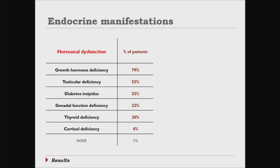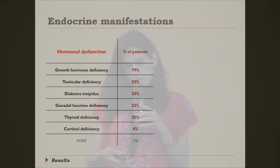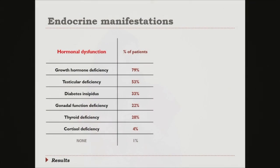Gonadal function deficiency — the difference between testicular deficiency and gonadal function deficiency is that in the latter it comes from the pituitary. Here the testicle is infiltrated; here it is the pituitary which is infiltrated, and then the gonads — ovaries in women and testicles in men — do not function. Thyroid deficiency is seen in about 20% of patients. Cortisol deficiency is pretty rare. And an important thing is that almost nobody has no hormonal deficiency — you don't always have symptoms, but if you look for a hormonal deficiency in ECD, you'll probably find one.